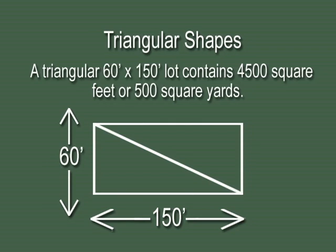We could put two of those into the rectangle and each of them would be 500 square yards making up the 1,000 square yards of the rectangle. So this particular triangle is just one-half of the previous rectangle.